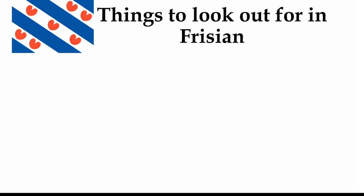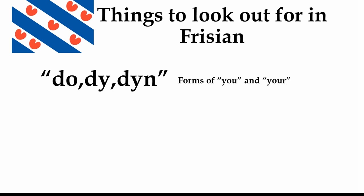Now we're going to move on to some things to look out for in Frisian. In Frisian, we have these forms of 'you' and 'your', which are 'do', 'dai', and 'din'. This is purely in Frisian out of these three languages. It's a bit more like German if you know 'du', for example. So that's something that might trip you up.